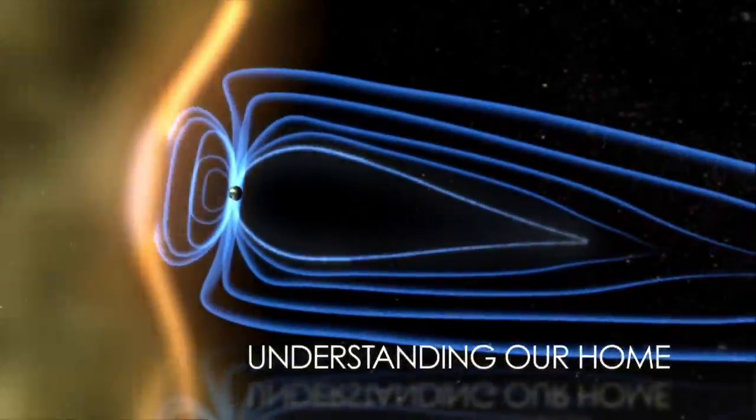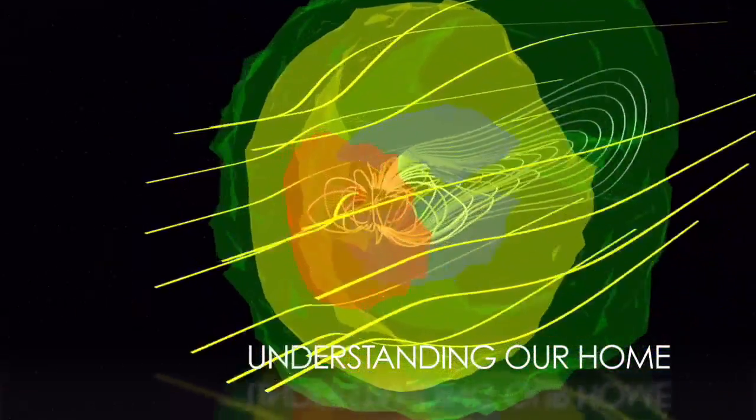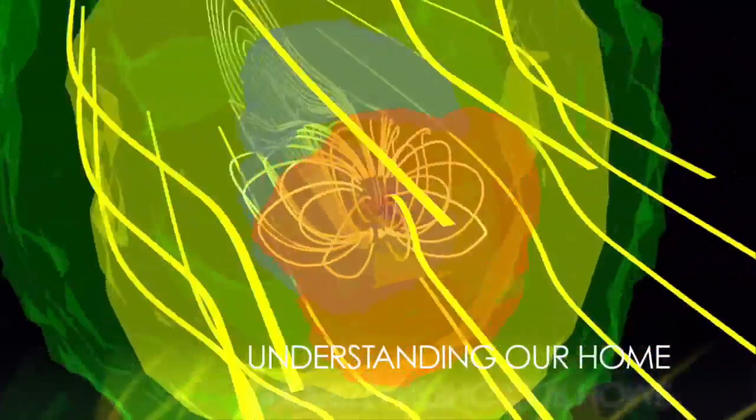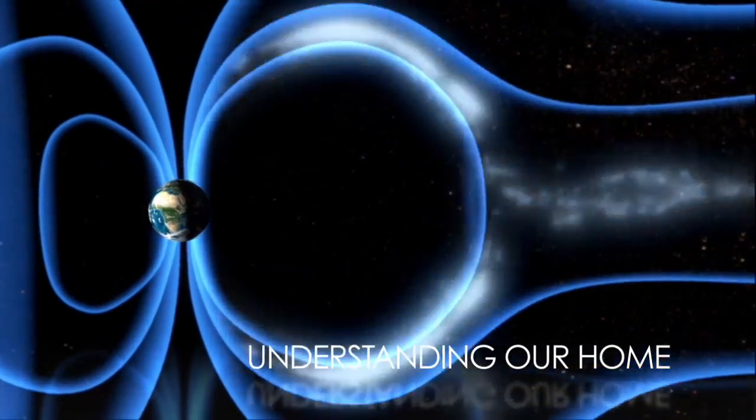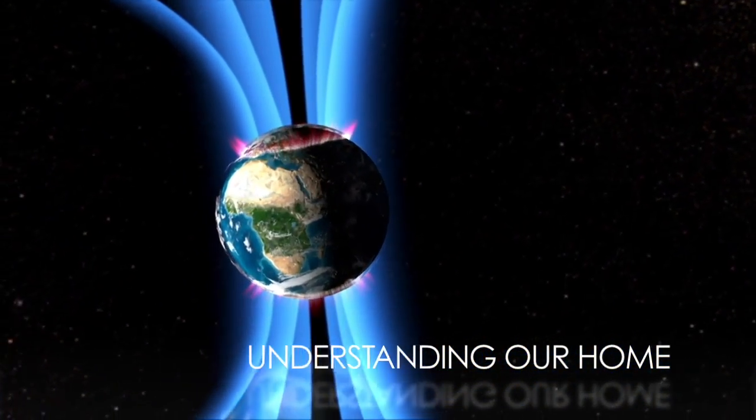NASA also studies how the Sun's variability affects our home. Solar storms and solar winds have a strong effect on the Earth and its magnetic field. By studying the Sun's natural ebb and flow, we can learn more about its role in creating phenomena such as the Northern Lights.